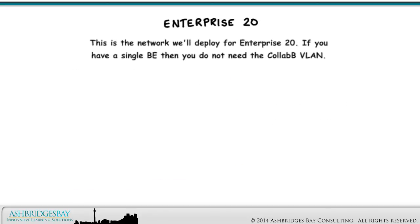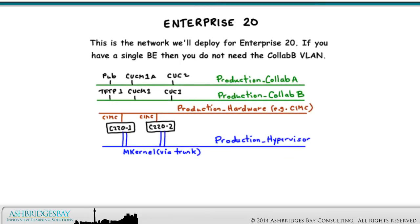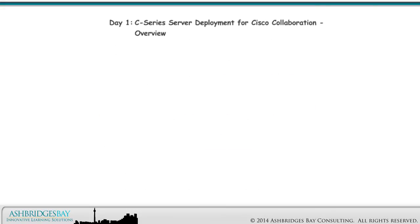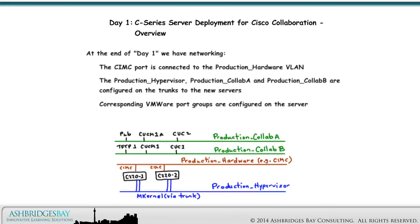This is the network we'll deploy for Enterprise 20. If you have a single BE, then you do not need the Collab-B VLAN. The network is described in detail in the drawing Day 1 UC on C-Series Rack and Cabling. At the end of day one, we have networking configured: the CIMC port is connected to the production hardware VLAN, and the production hypervisor, Production Collab A, and Production Collab B are configured on the trunks to the new servers. Corresponding VMware port groups are configured on the server.